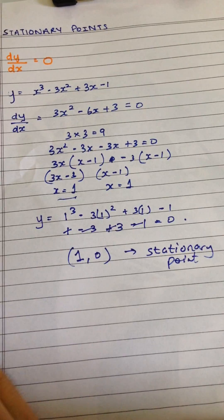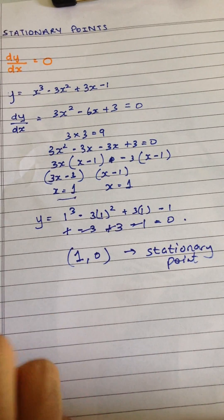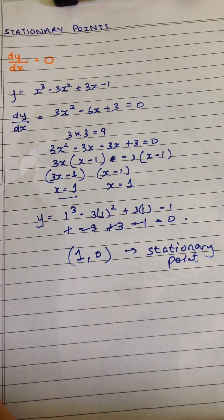So on the curve y is equal to x cubed minus 3x squared plus 3x minus 1, the stationary point is 1 comma zero. That's why the gradient is neither increasing nor decreasing.